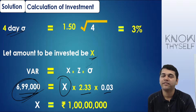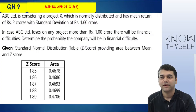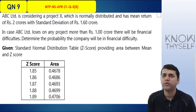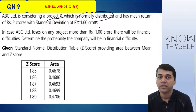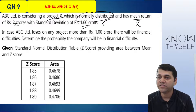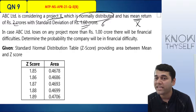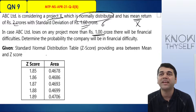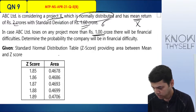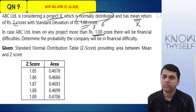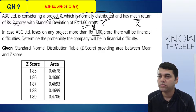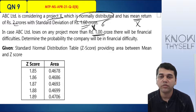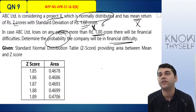Last question for the chapter — mark this important. ABC is considering project X, which is normally distributed and has a mean return X-bar of 2 crore and standard deviation of 1.6 crore. In case ABC loses on any project more than 1 crore, there will be financial difficulty. That means I don't want to lose more than 1 crore — X equals 1. Determine the probability that the company will be in financial difficulty.